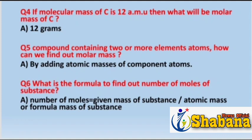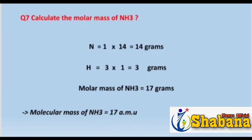The formula to find the number of moles of a substance is: number of moles equals given mass of substance divided by molar mass of substance. For example, question number seven: calculate the molar mass of NH₃.